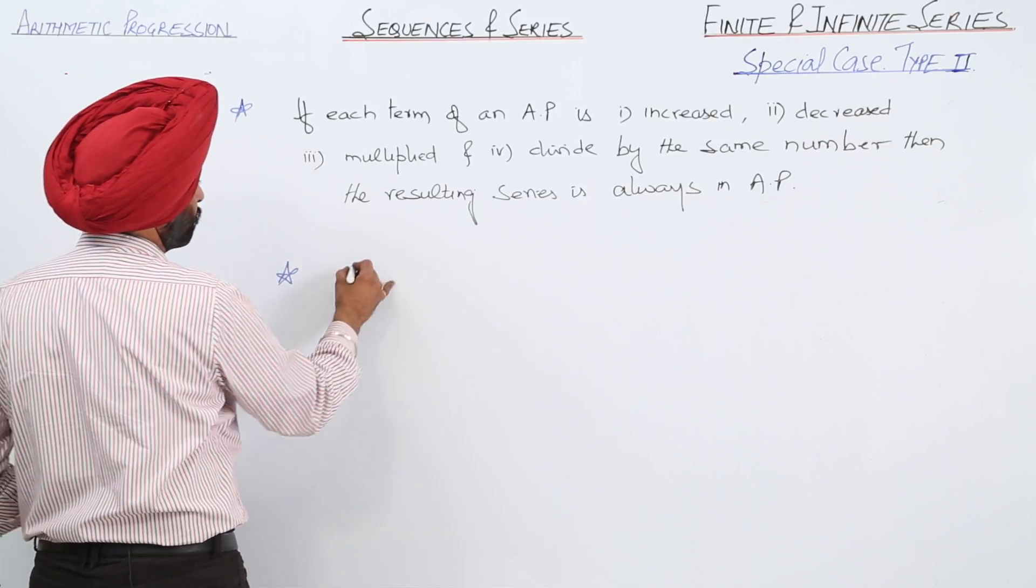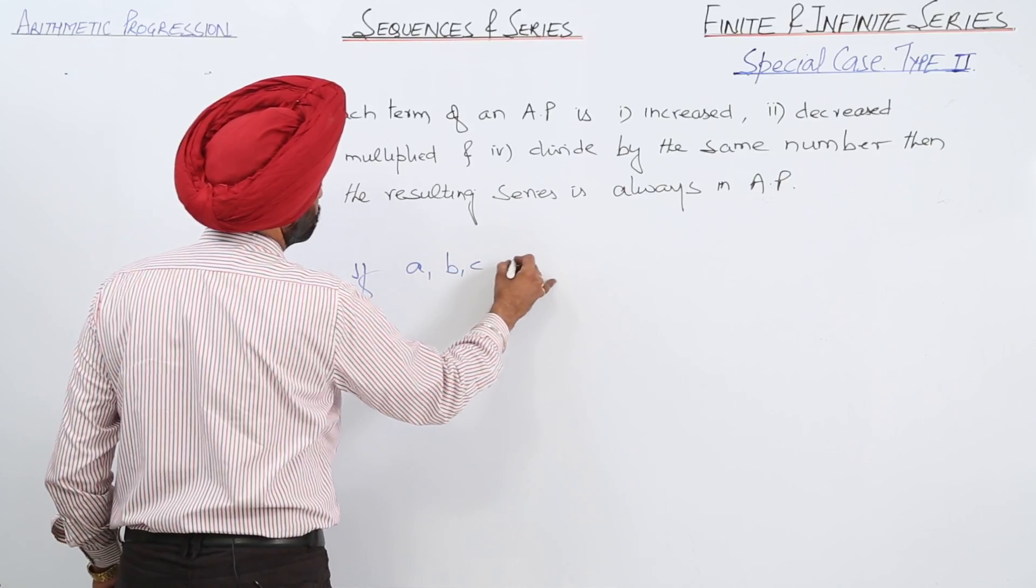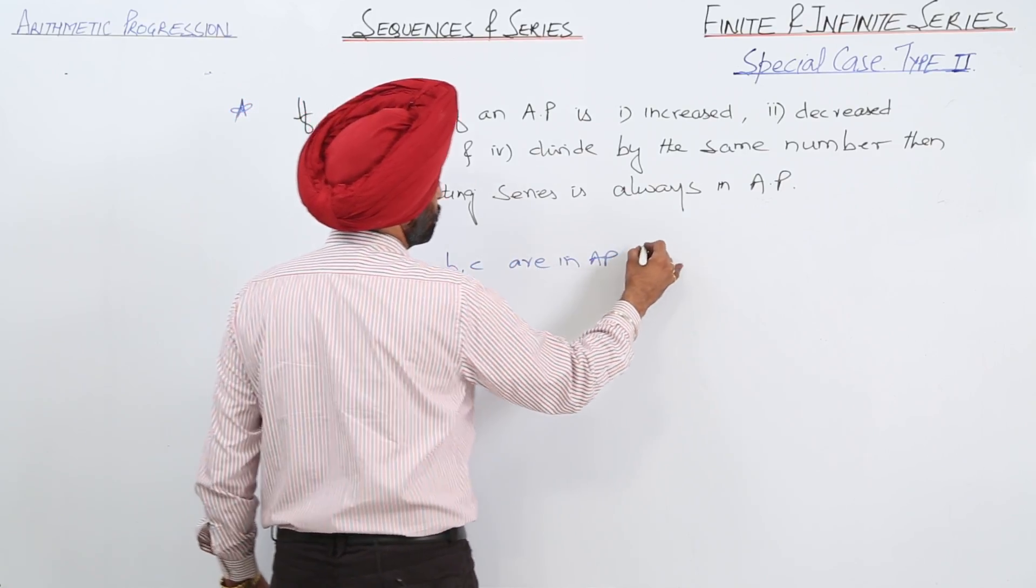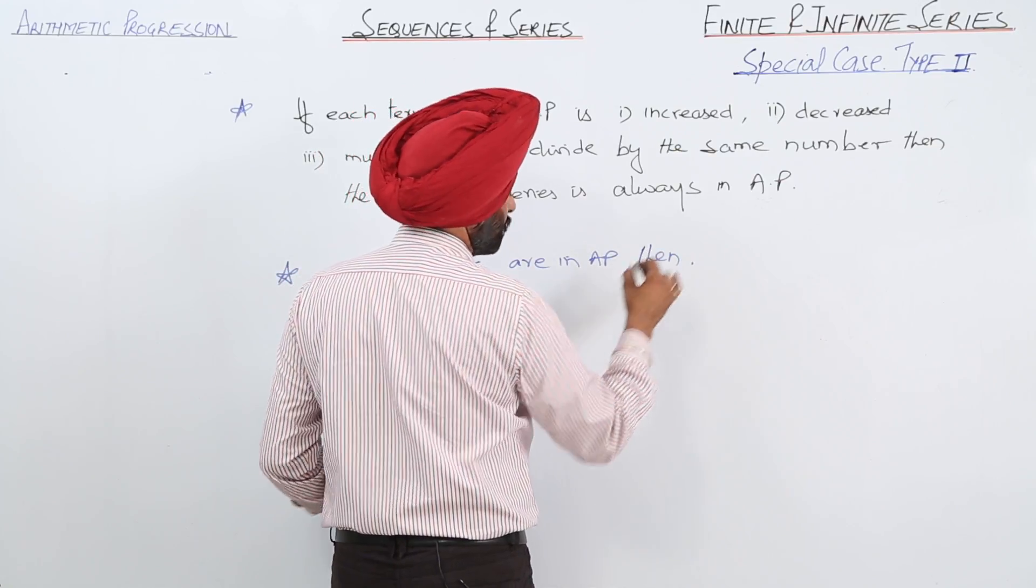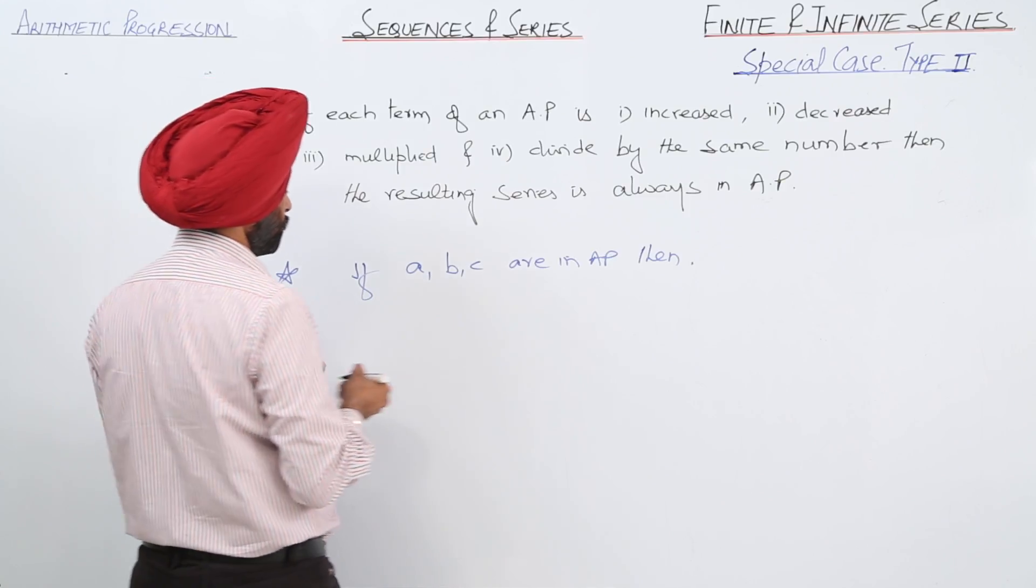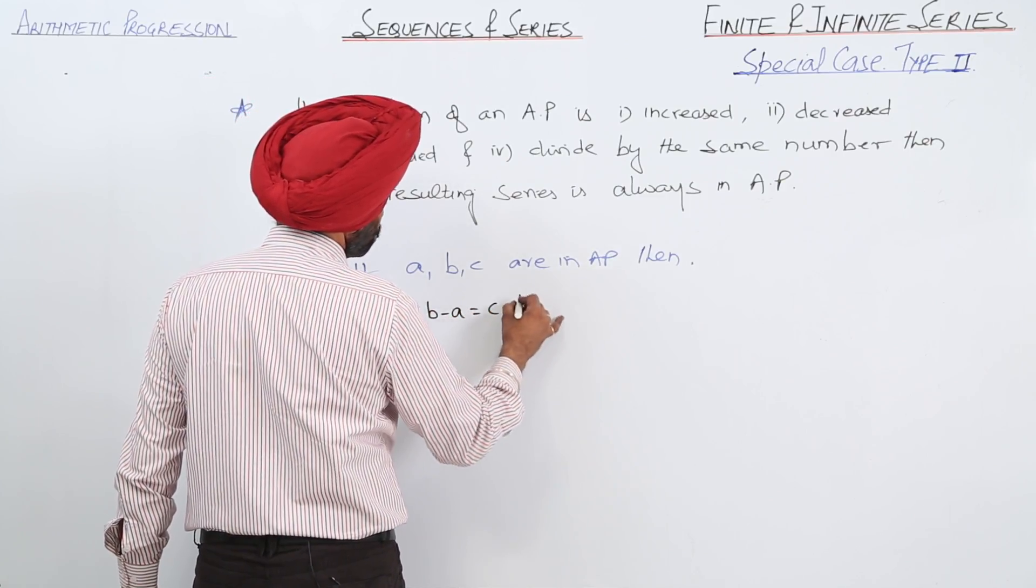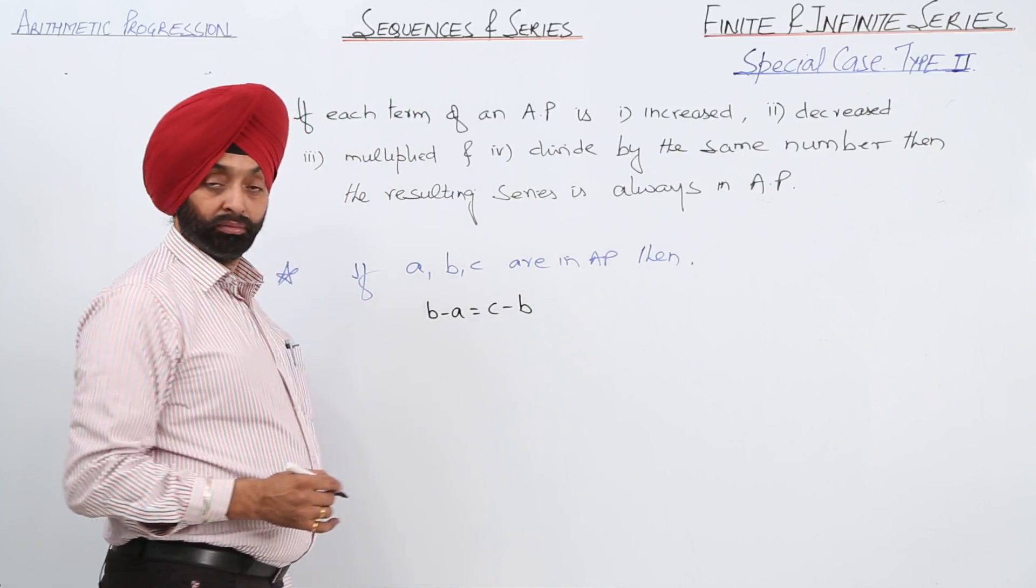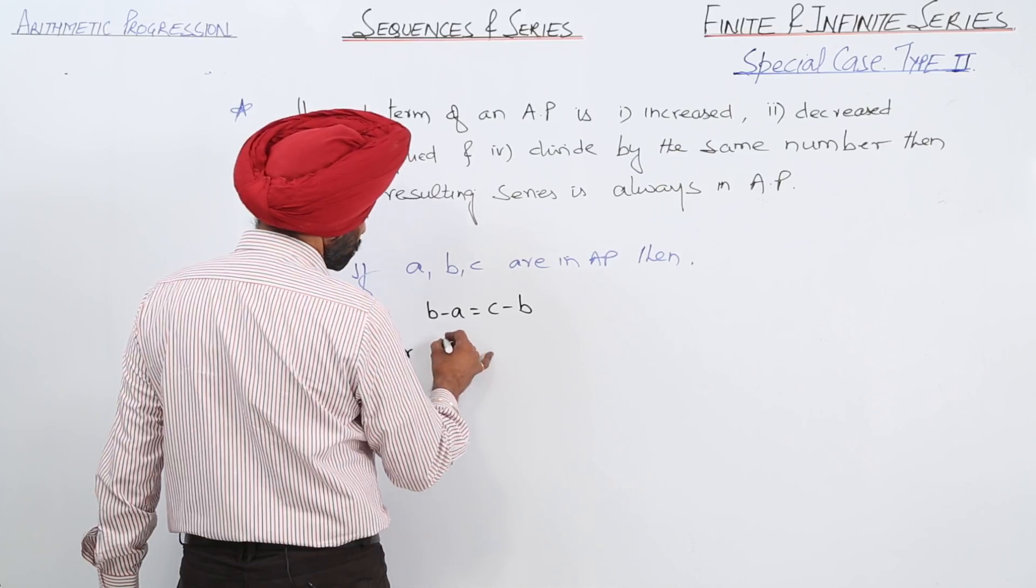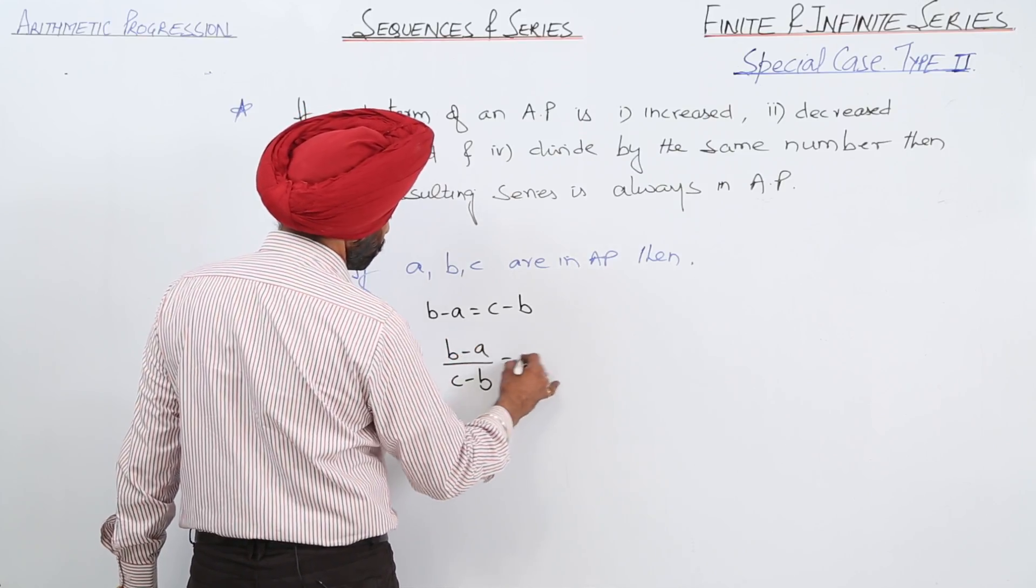The second thing: if A, B, C are in AP, then we write B minus A equals C minus B. That is the common difference. Or we can write (B-A)/(C-B) equals 1. Okay?